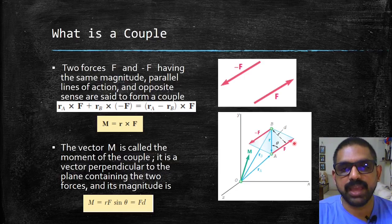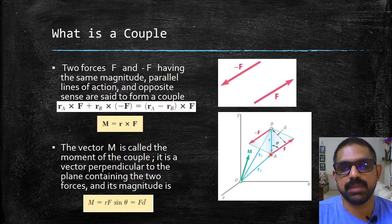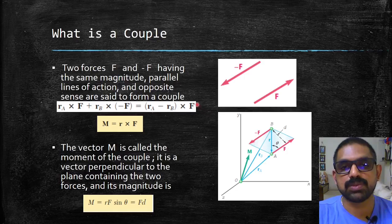We have r_A cross F plus r_B cross minus F. This is already covered in the last lecture. This turns out to be (r_A minus r_B) cross F. If you look at this vector diagram, r_A is here, r_B is here, so r_A minus r_B would be this vector r_AB, and that will be r_AB cross the same force F.